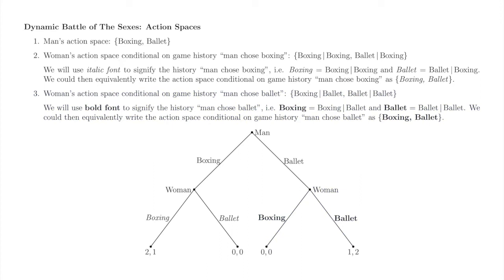Now for the woman's action space conditional on the man selecting ballet. This action space is in blue in the list and on the tree. We use bold font for the woman's action here as shorthand to indicate that she is selecting from the action space conditional on the man going to the ballet. Looking at the tree and recalling our definition of the extensive form, the specification of a dynamic game of complete information includes a description of each action space but does not include a description of players' respective strategy spaces.